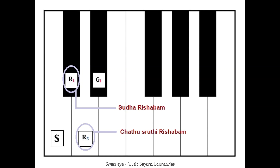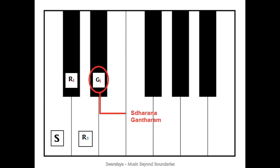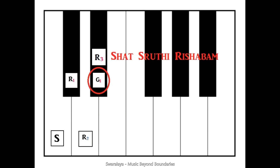Let's make it easy with the keyboard. We know Ri 1 is Shuddha Rishabha and Ri 2 is Chattu Shruti Rishabha. The next note after Ri 2 is Ga 1. This Ga 1 is theoretically represented as Ri and given the label Ri 3. So Ga 1 can also be called Ri 3 — the sound of Sadharna Gaantaram is just given another name and symbol as Ri 3, which is named Shat Shruti Rishabha.